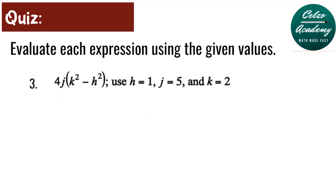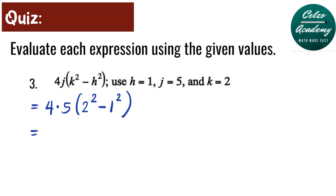Question number 3. Evaluate the expression 4j times the quantity k squared minus h squared, using h equals 1, j equals 5, and k equals 2. We substitute: 4 times 5 times the quantity 2 to the 2nd power minus 1 to the 2nd power. Let's simplify the parentheses: 2 squared is 4 and 1 squared is 1, so we have 4 minus 1 equals 3.